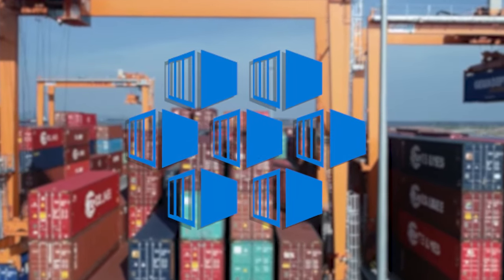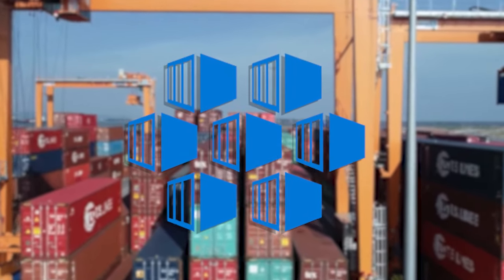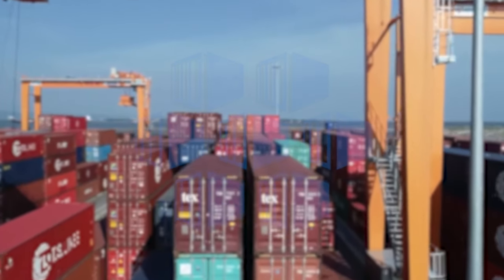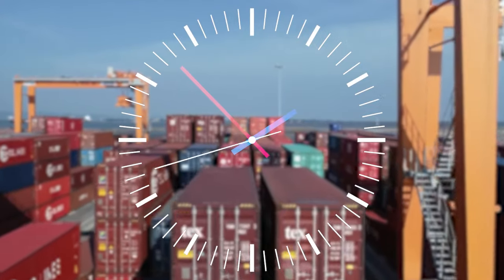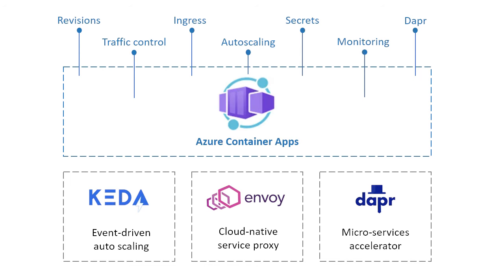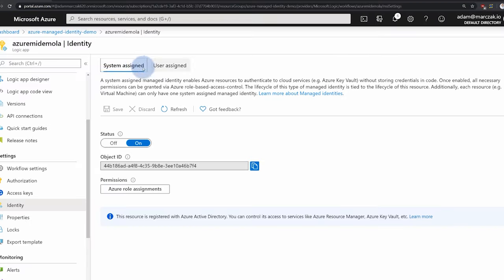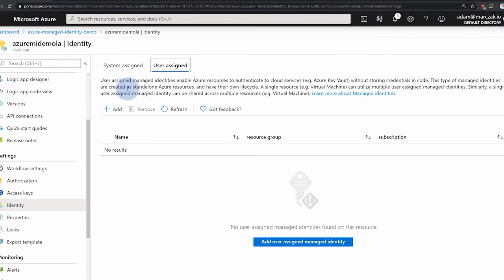Azure Container Apps also supports long-running, always-on background services that process events continuously. Although these services typically don't have public endpoints, you can enable ingress for those that do, securing them within a VNet or using managed identities to access other protected Azure resources.